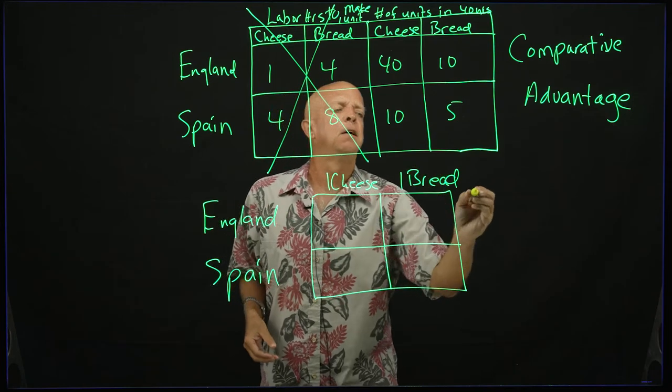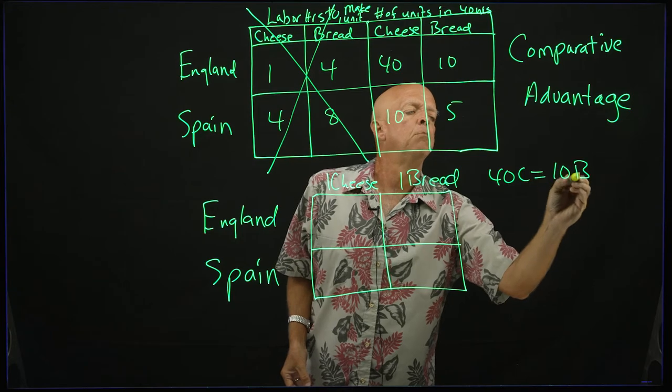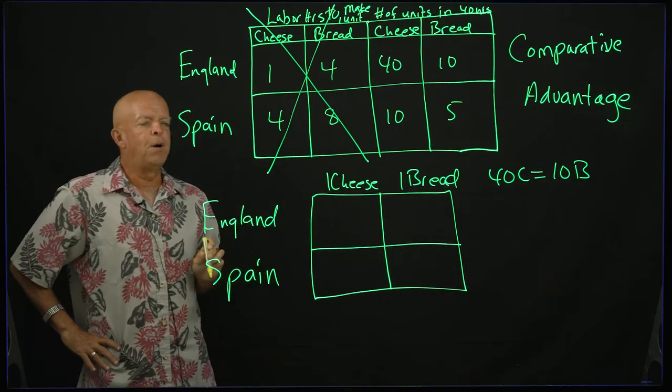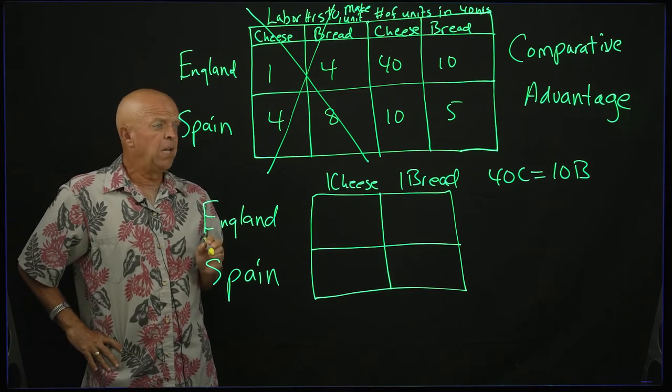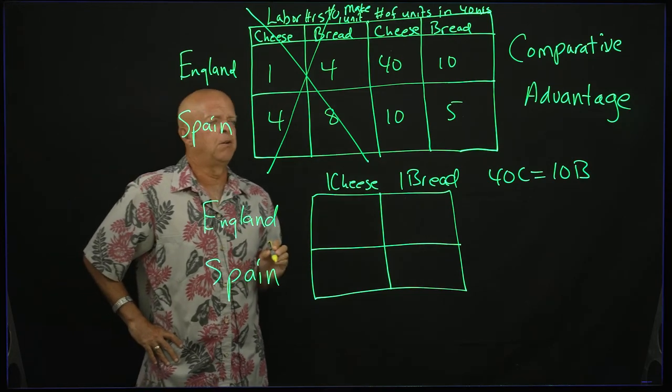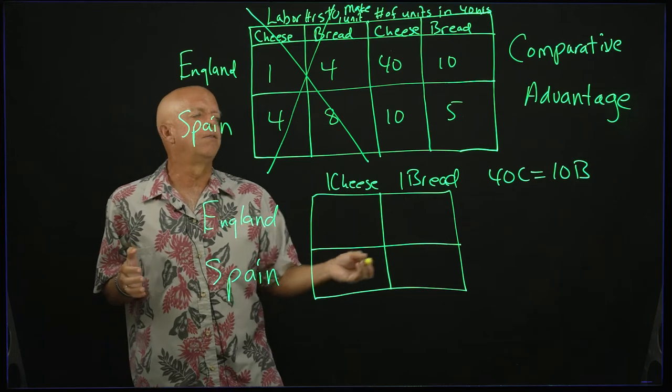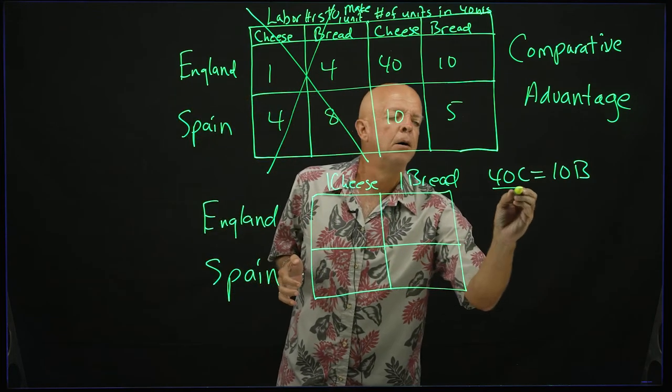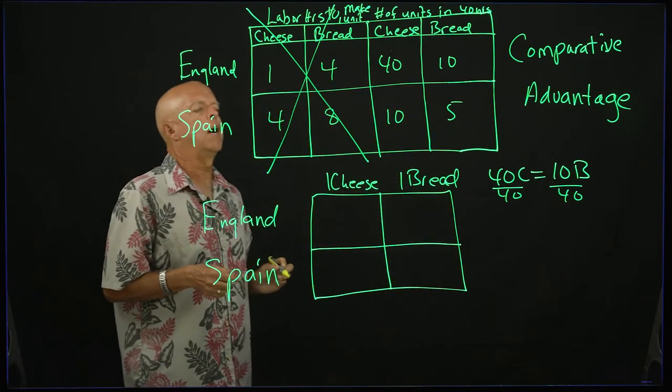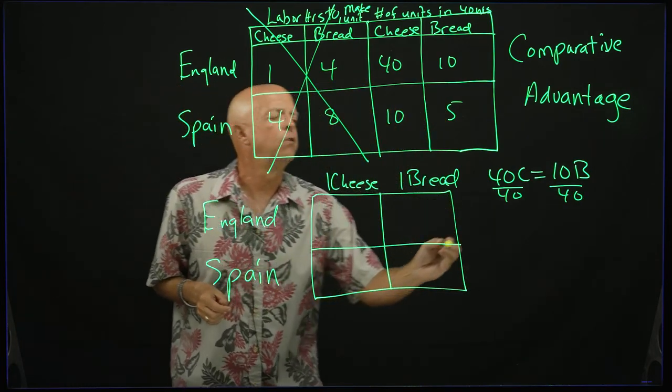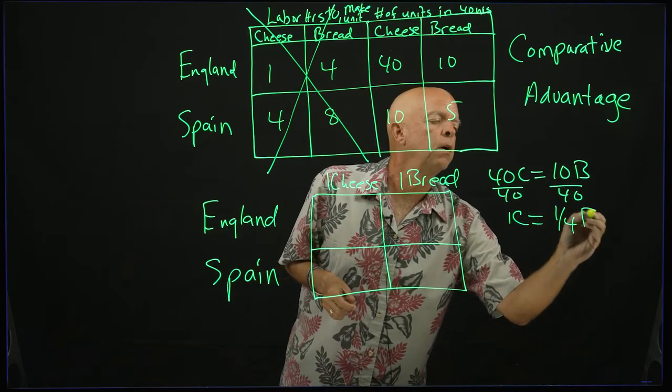And to put these numbers in here, what you do is you make a little algebraic equation of these two numbers right here. So in the case of England, it will be 40c equals 10b. The equal sign means in 40 hours, England can make either 40 units of cheese or 10 units of bread. Now in order to get one cheese in terms of bread, what do you do? You divide by 40. And whatever you do to one side, you do to the other side, divide by 40 gives you 1c equals 1/4b.